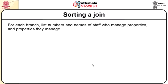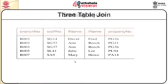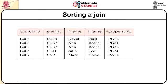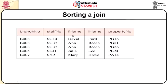For sorting a join: for each branch, list numbers and names of staff who manage properties and the properties they manage. SELECT s.branch_number, s.staff_number, first name, last name, and property number FROM staff s, property_for_rent p WHERE s.staff_number = p.staff_number ORDER BY s.branch_number, s.staff_number, and property_number. The result lists branch number, staff number, first name, last name, and property number ordered accordingly.